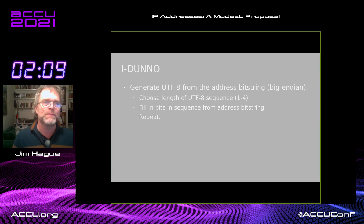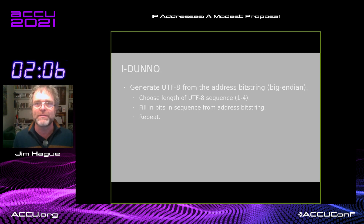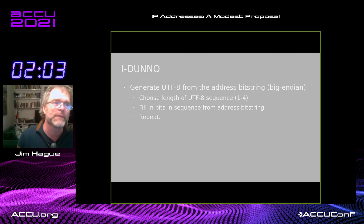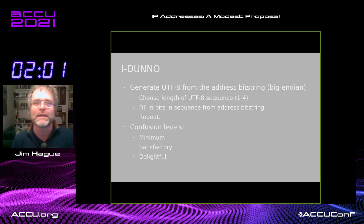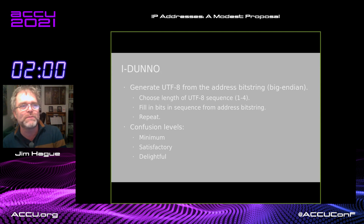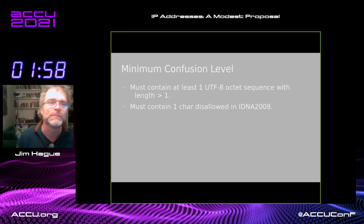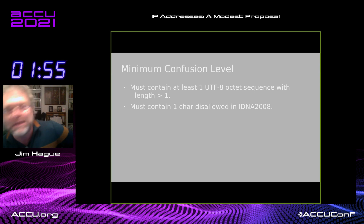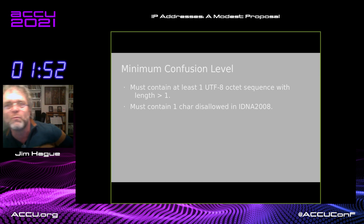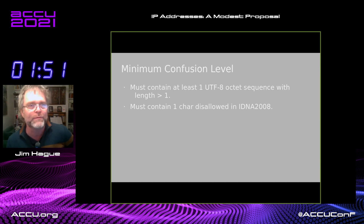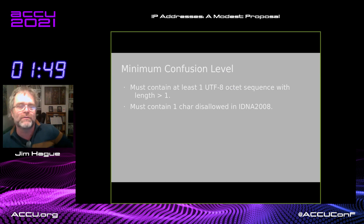And what you're aiming for, because obviously you've got a lot of choice in this, is to generate the most confusing UTF-8 that you possibly can. And we define three confusion levels: minimum, satisfactory, and delightful. A minimum confusion level must contain at least one UTF-8 sequence that's greater than one in length, and it must contain one character disallowed in iDNA 2008.